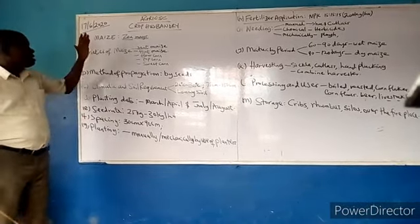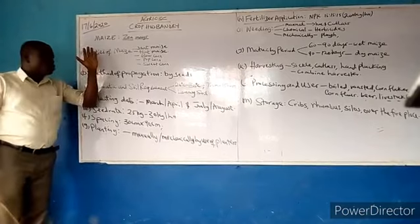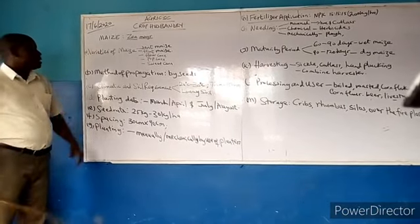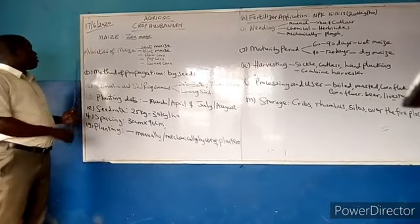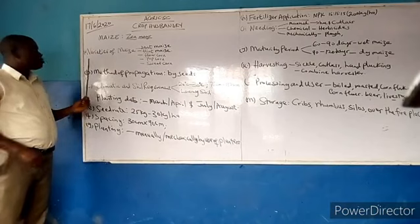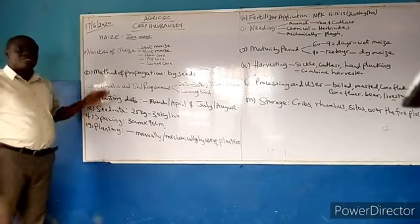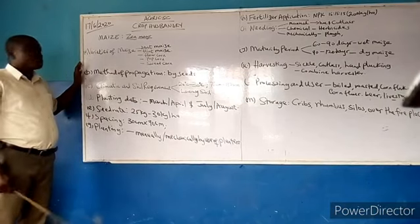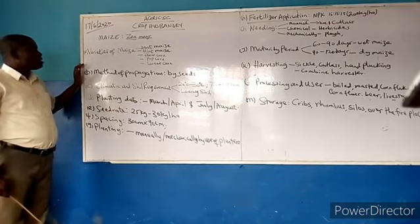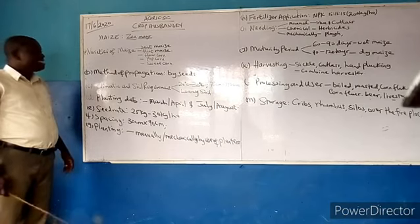If we look at maize, we have varieties of maize — that word 'varieties' means species of maize. The various varieties or species of maize include dent maize and flint maize.